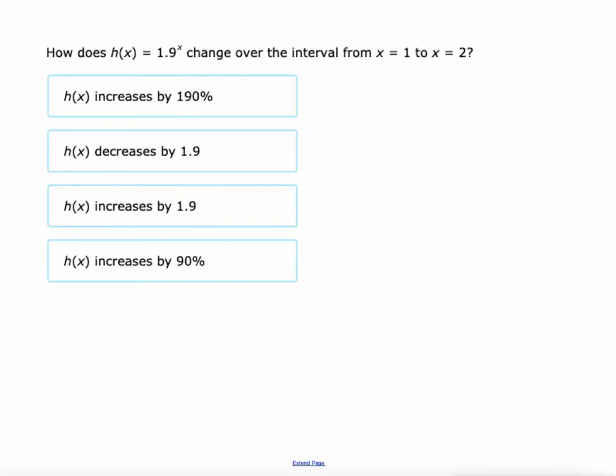On this one, same idea here. I'm going to take this function and rewrite it. h of x equals 1 plus 0.9 to the power of x. And this 0.9 right here, it's an increase because it's addition. And by 0.9, that's 90%. So it increases by 90%.